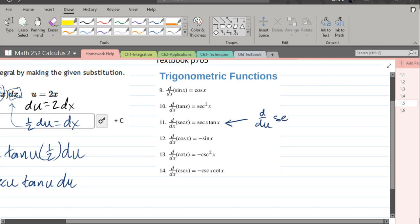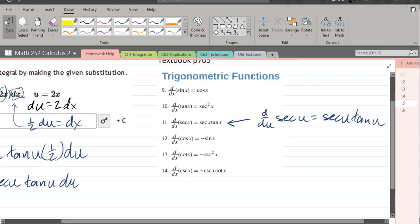You don't need to do this. So we got derivative of secant u is secant u tangent u. And so now we know what function has a derivative of secant u tangent u. The answer is the function secant u.